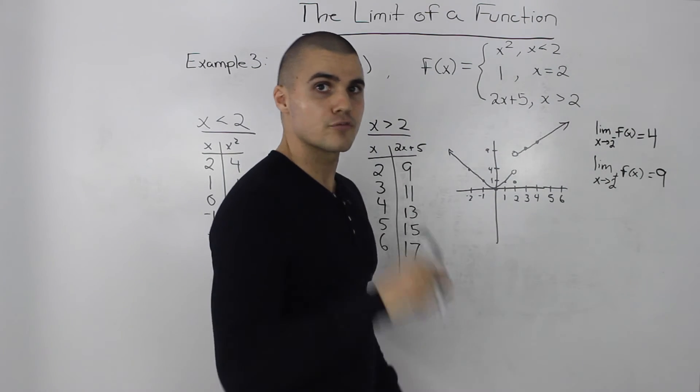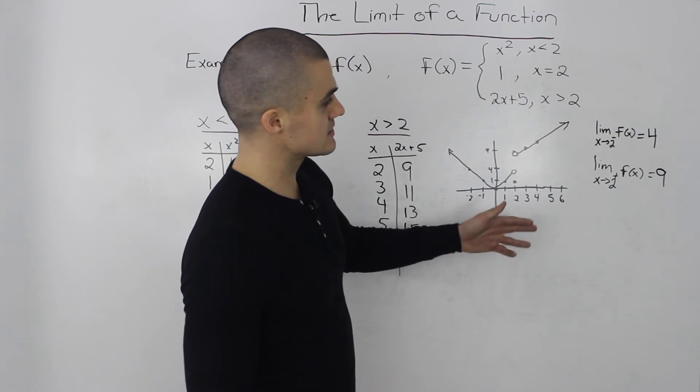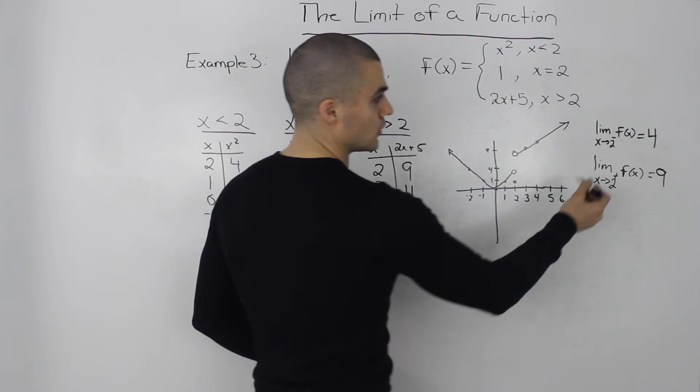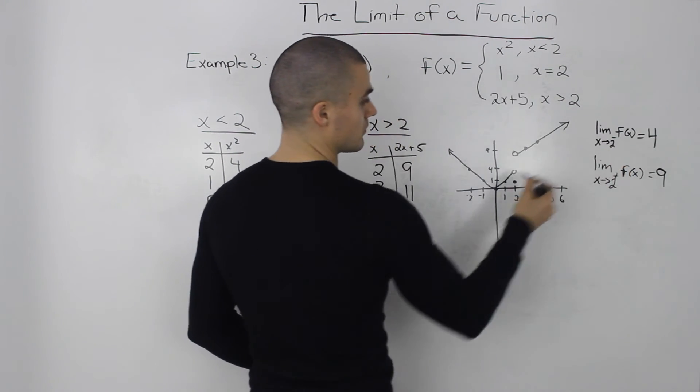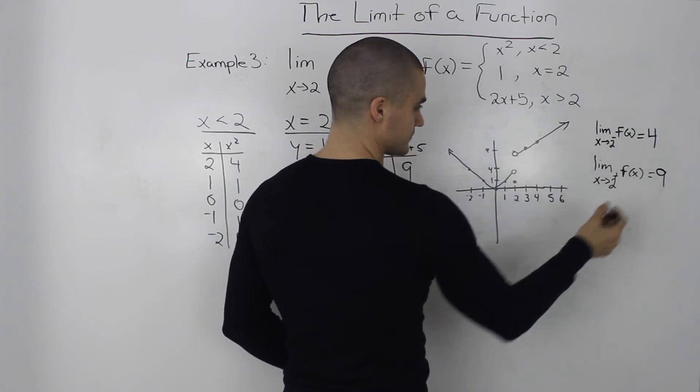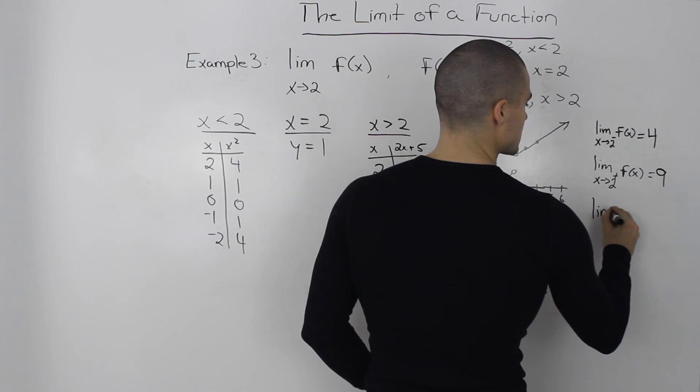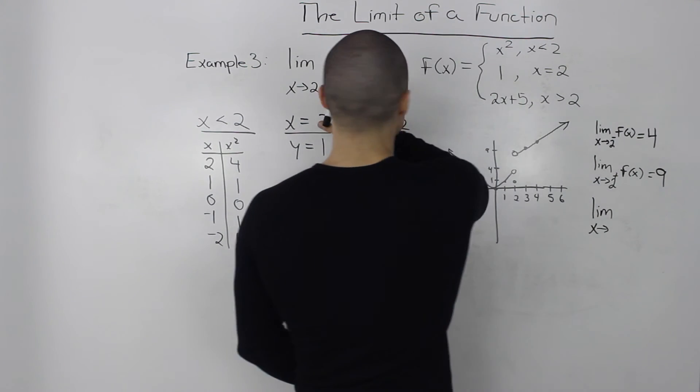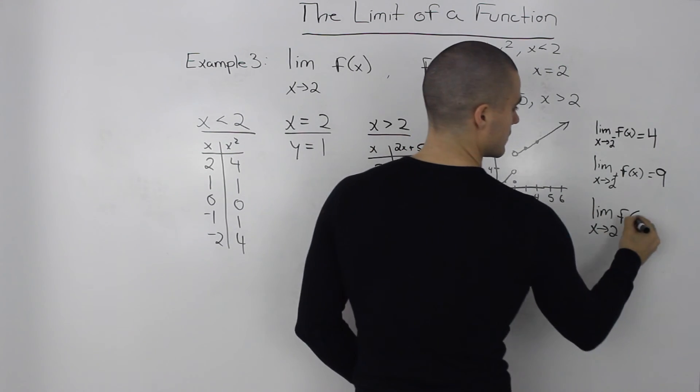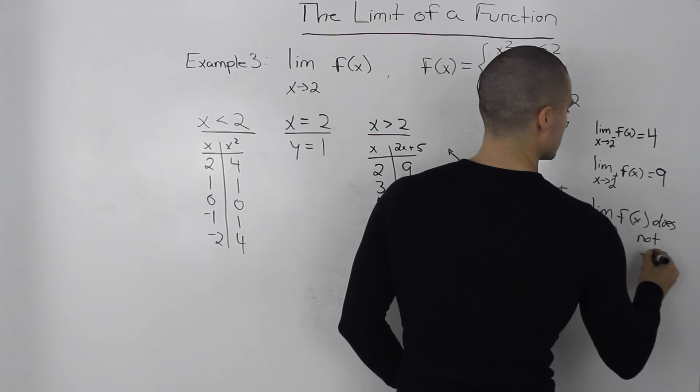So if we think back to what the definition of a limit is or when it exists, it exists when it approaches the same value from both sides. But if you notice here when it's approaching 2 from the left side it's approaching 4. And when it's approaching 2 from the right side it's approaching 9. So it's approaching different values. So our conclusion is the limit as x approaches 2 of this function f of x does not exist.